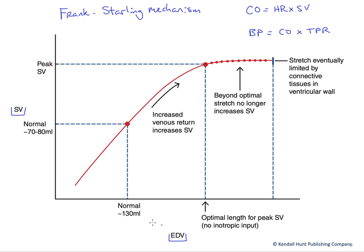At a normal preload, or EDV, of about 130 milliliters, we would generate a normal stroke volume of about 70 to 80 milliliters. As we increase filling and EDV rises, we're going to stretch that muscle to a greater degree and get a harder contraction that will eject more blood from the heart.